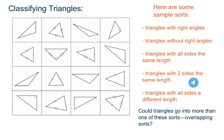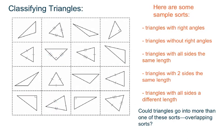I could look at triangles with two sides the same length — I've got this one, this one, and this one. Or triangles with all sides a different length. I know I've got that one because they have one, two, three marks on them — they're all different for sure.